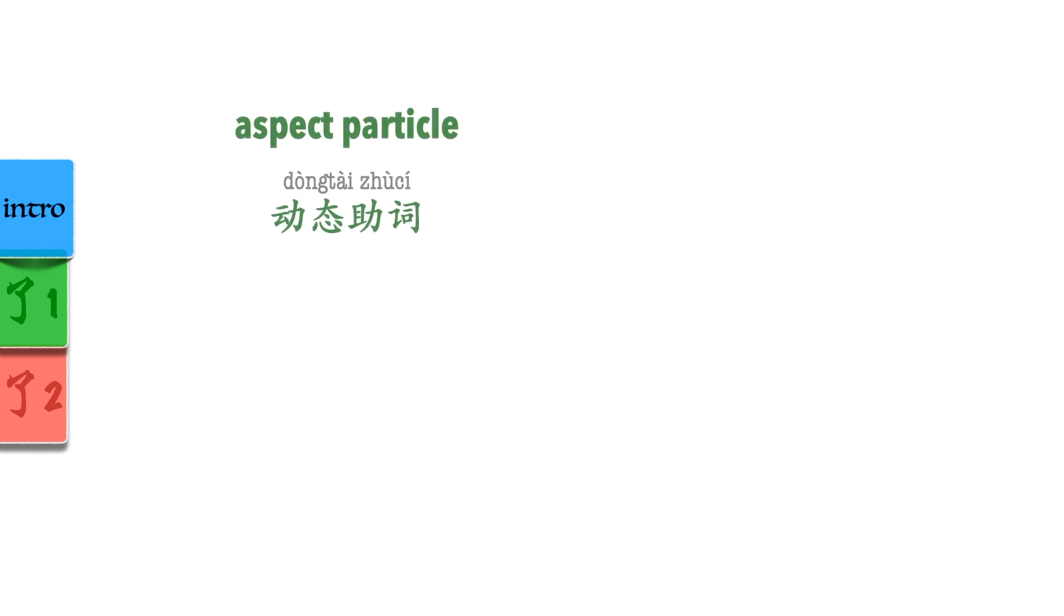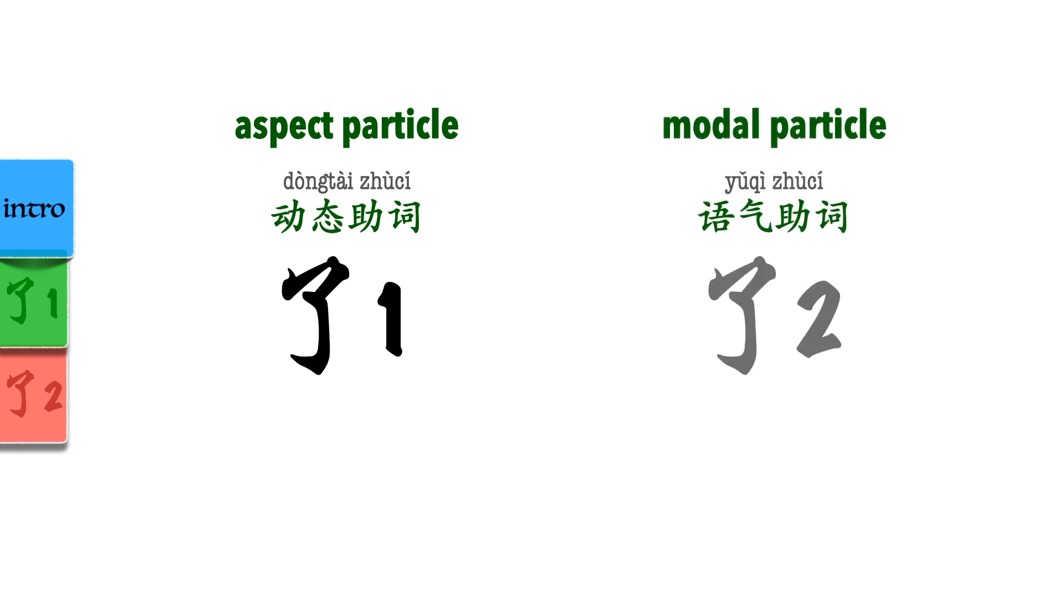Let's learn Mandarin with a clean slate of mind. So, what is 勒? There are, broadly speaking, two types of 勒. The first is called an aspect particle, usually called 勒1 动态注词. And the second is called a modal particle, usually called 勒2 语气注词. They may look the same but are actually different creatures.